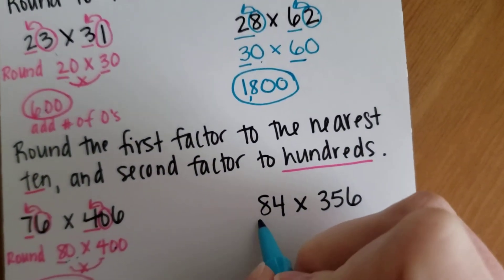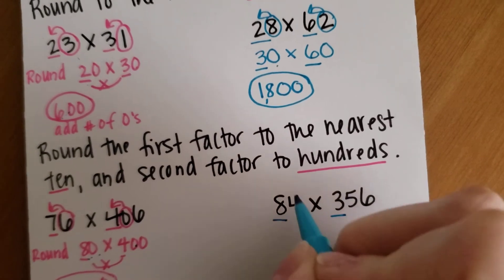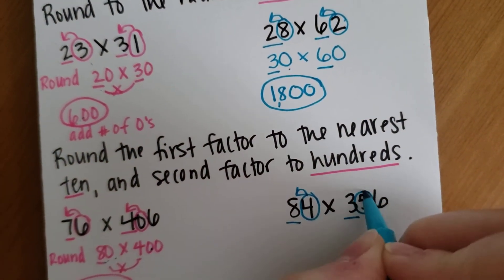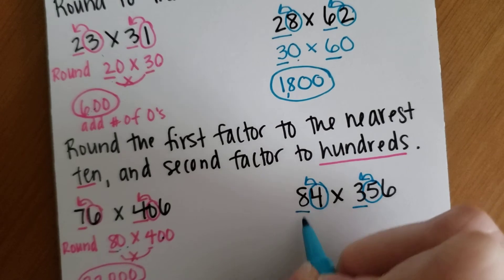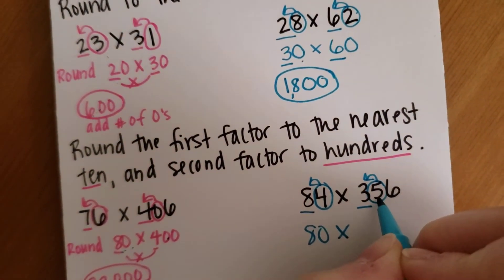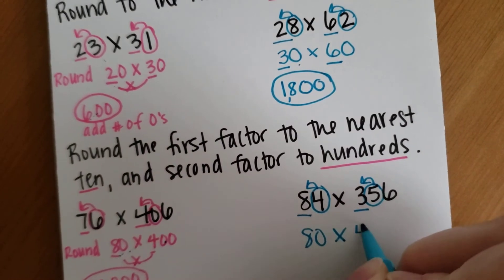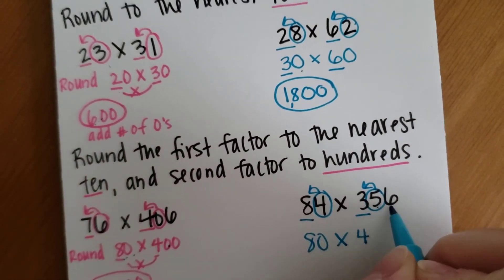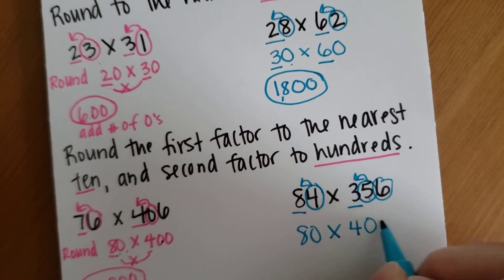So over here I'm underlining my 10s and my 100 spot, and then my numbers that are going to be telling me what to do. So 4 or less, let it rest. So this is going to stay 80. 5 or more, raise the score. So that 3 is going to turn into a 4, and then I have 2 spots behind, so those are both going to be zeros.